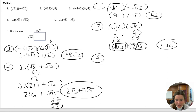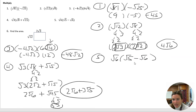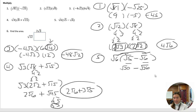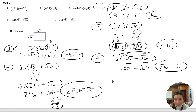Okay, number five: we have square root six times square root five minus square root six. Neither one of these in the parentheses simplifies, so we're just going to distribute the square root six to both the square root five and the negative square root six. Square root six times square root five is square root of 30, and square root six times negative square root six is negative square root of 36. The square root of 30 does not simplify, and square root of 36 is really just six. So you end up with square root of 30 minus six as your final answer.